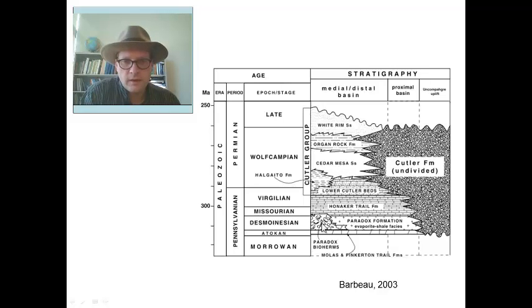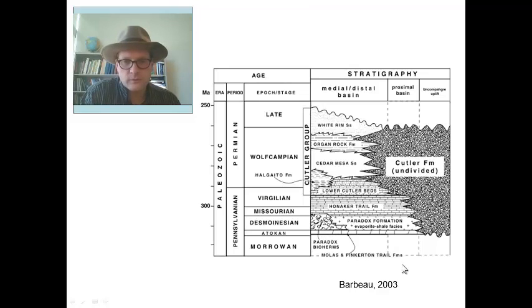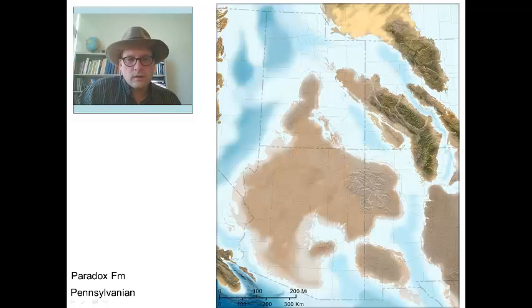If you head out to the far south, the Paradox Formation itself becomes more of a carbonate unit — a limestone unit with bioherms. We'll talk a little bit more about that later on.